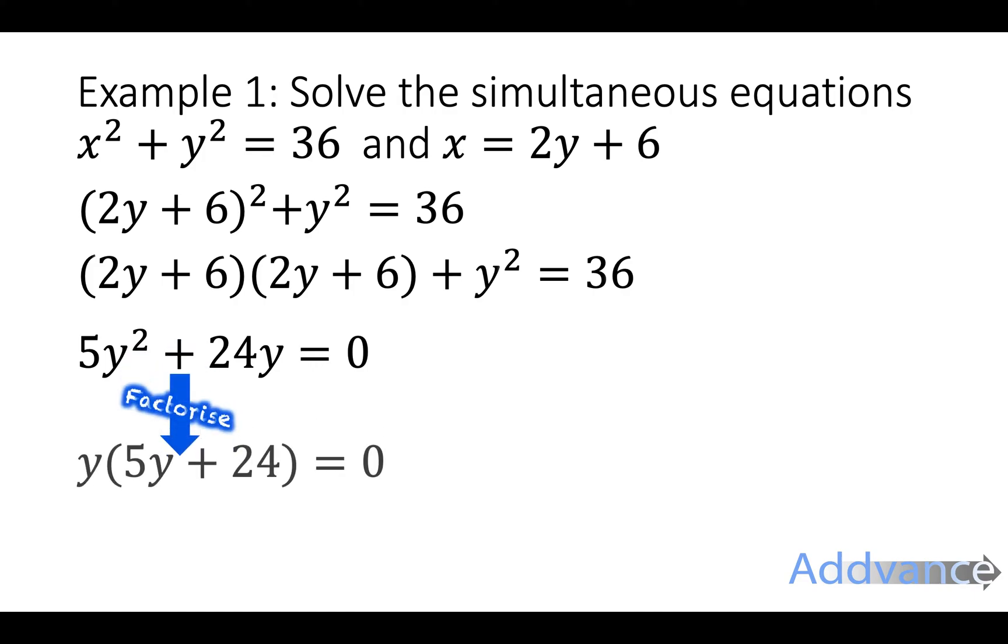We can then factorise as y times 5y plus 24 equals 0. Now remember when you're factorising this is to make it easier to solve. And what we know is that something times something is 0. So one of those things must be 0. Either the y is 0 or the 5y plus 24 is 0.